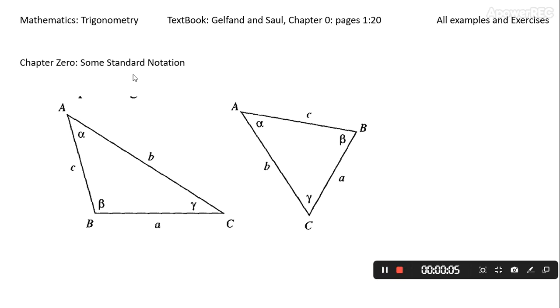Right, so let's just get done with this so-called standard notation. You should get used to it, and it is definitely very easy. Capital A, capital B, capital C always refer to angles.